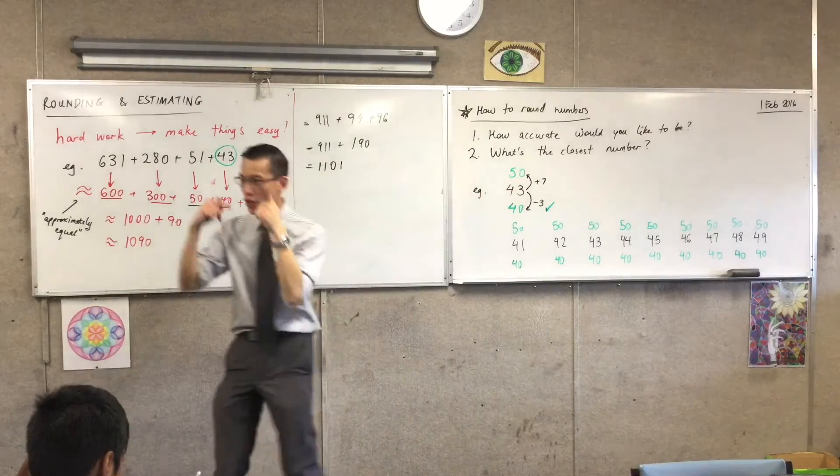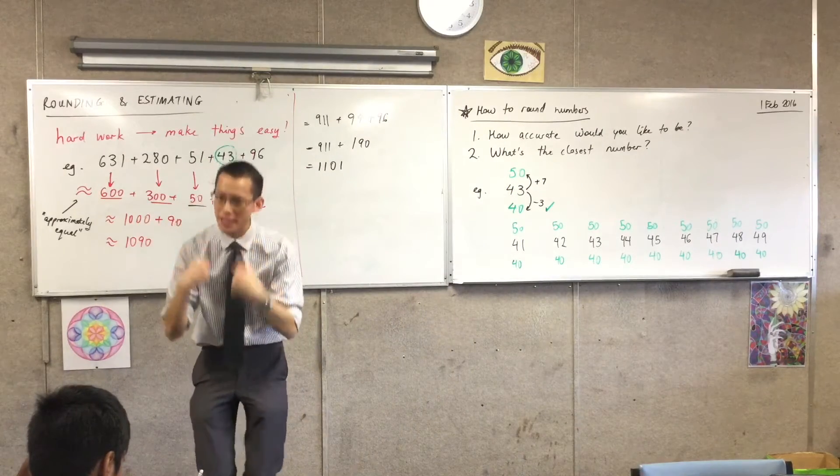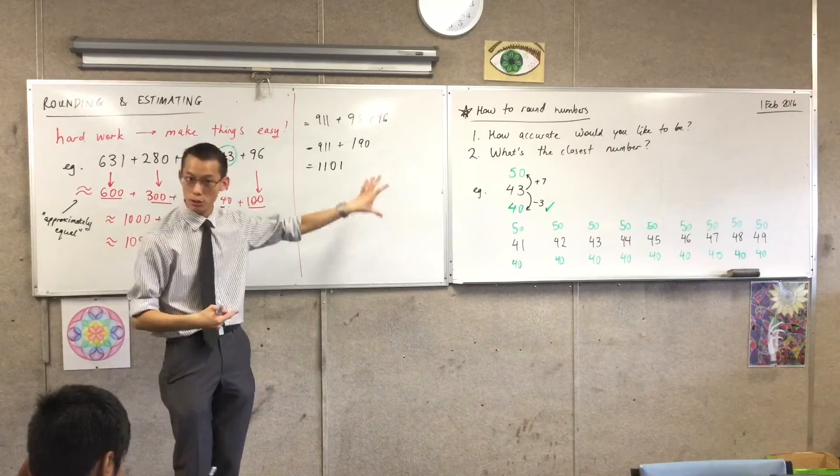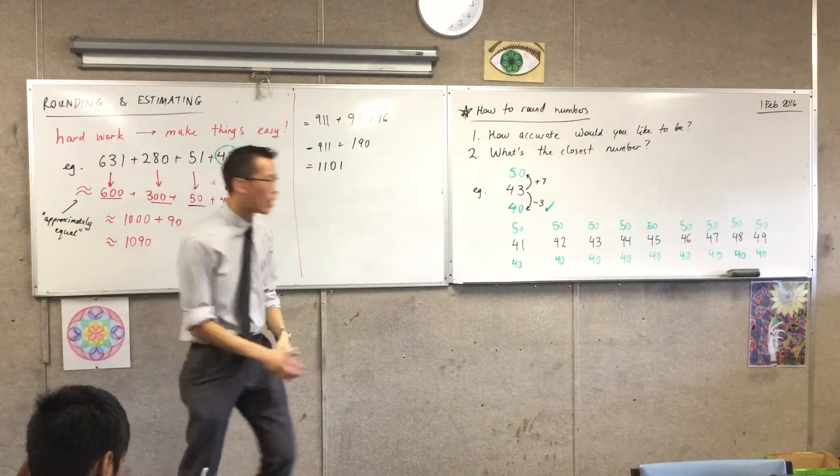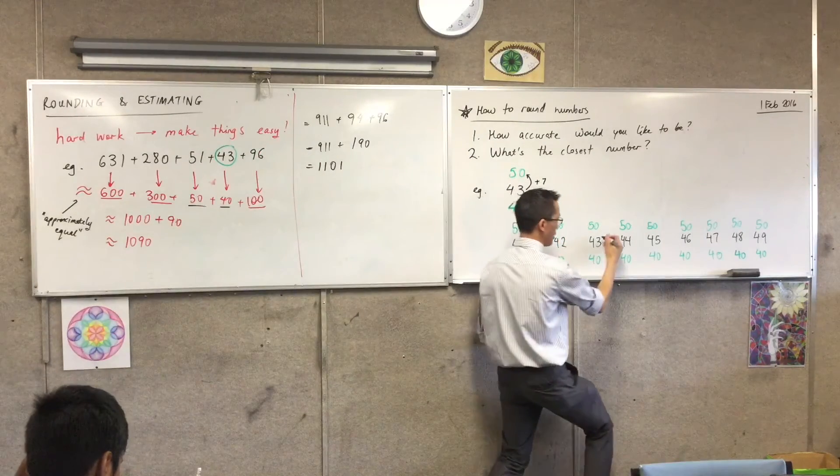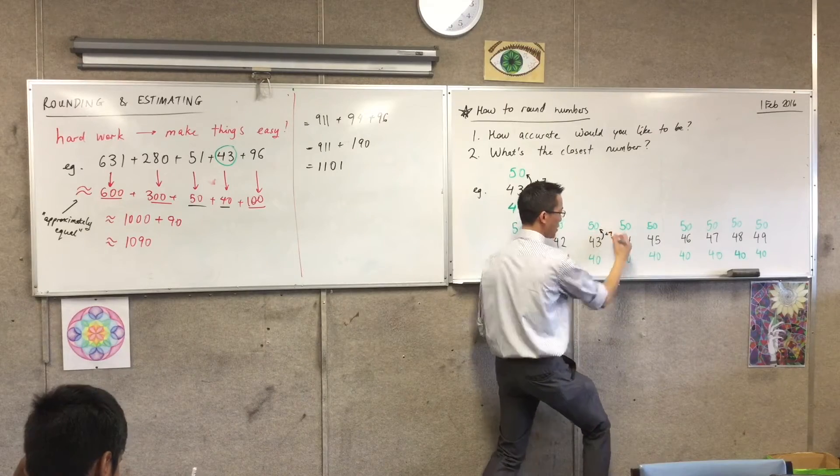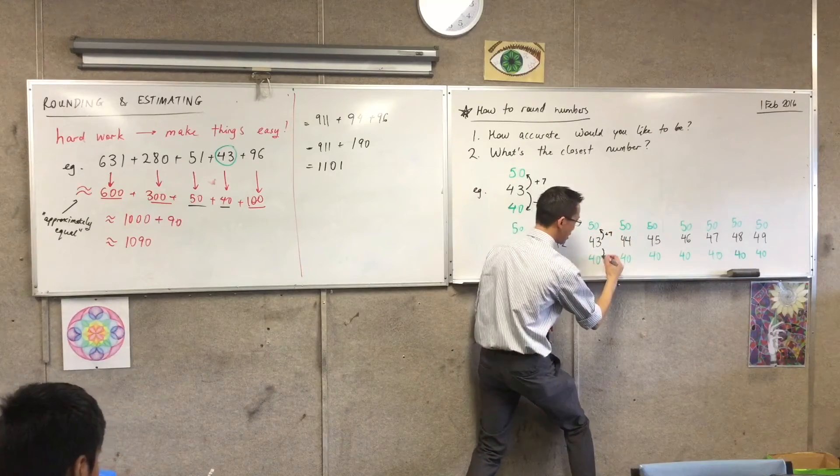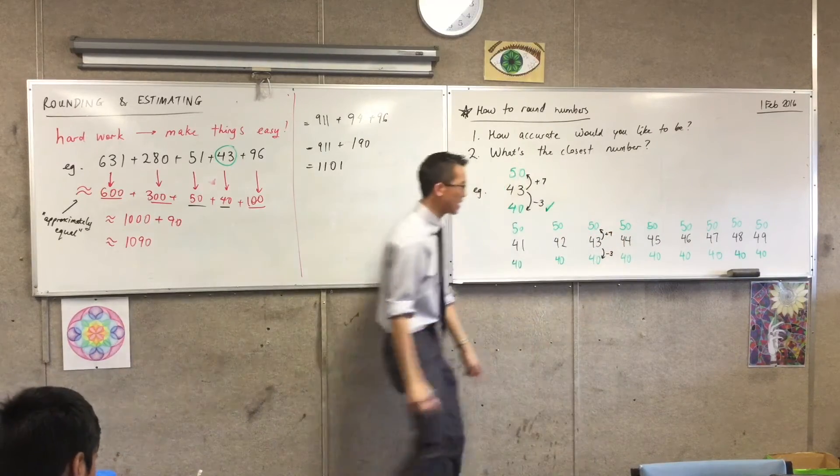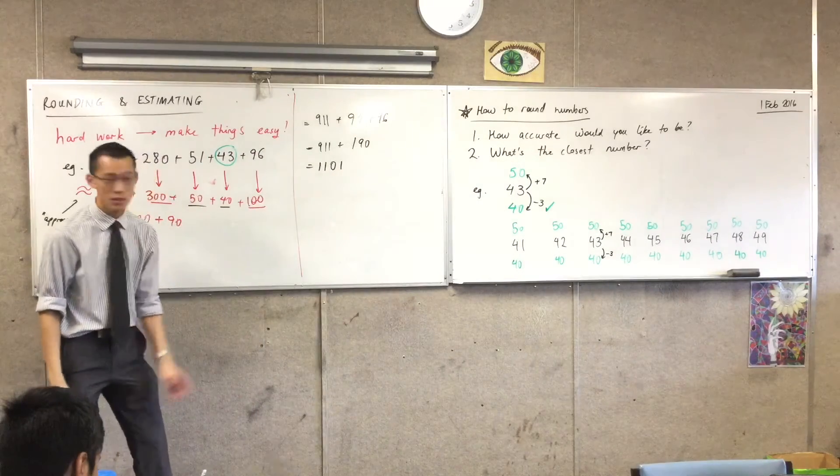So now that I've got my whole list here, let's think about how far they have to go up and how far they have to go down to get to these closest numbers. Now, we've already done one of them, right? We've already done 43. So we can fill that in already. Plus 7 to go up and take away 3 to go down. So we already know that one.